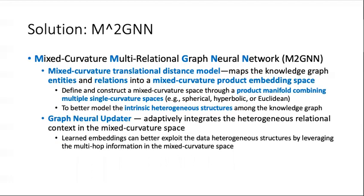The mixed-curvature translational distance model maps the large graph entities and relations into a mixed-curvature product embedding space. It is defined and constructs a mixed-curvature space through a product manifold combining multiple single curvature spaces, including spherical, hyperbolic, and Euclidean. With the help of that, it can better model the intrinsic heterogeneous structure among the large graph.